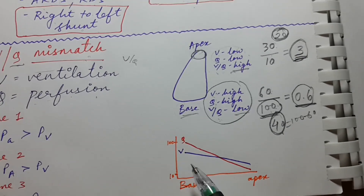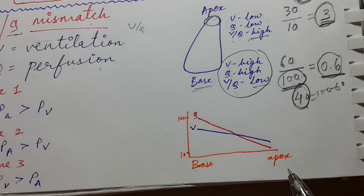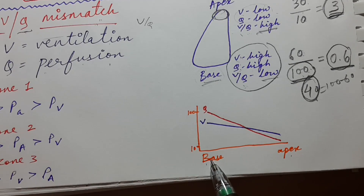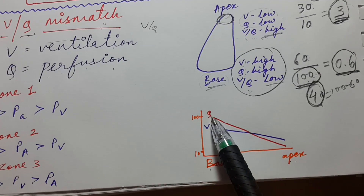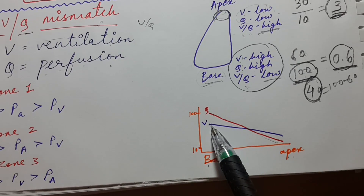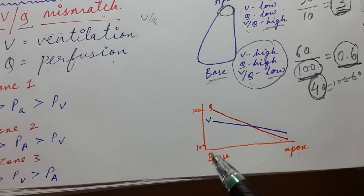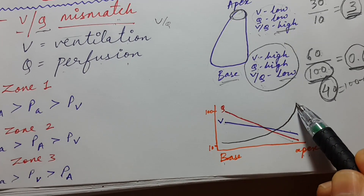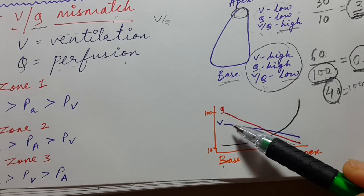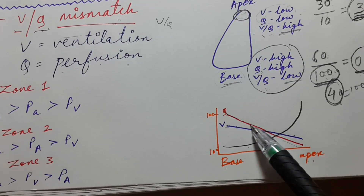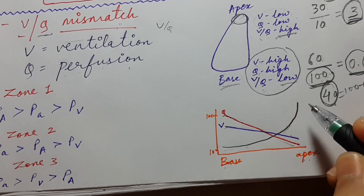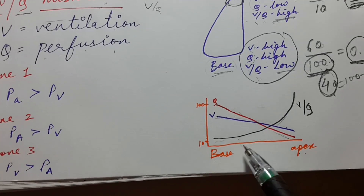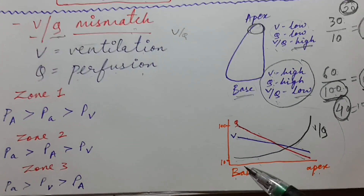Now let's look at the graph for ventilation, perfusion, and the VQ ratio. When we move from base to apex, both ventilation and perfusion decrease, but the decrease in perfusion is much greater. That's why the VQ ratio is low at the base and keeps increasing as we move toward the apex. On the graph, the perfusion line, ventilation line, and the VQ ratio line are three distinct curves.